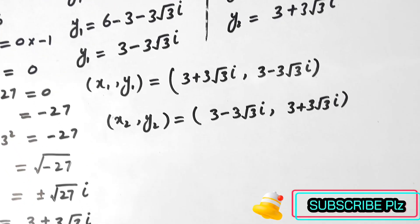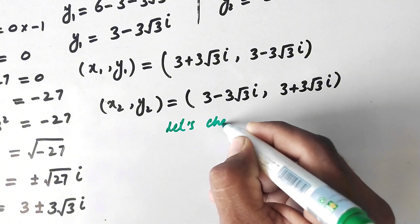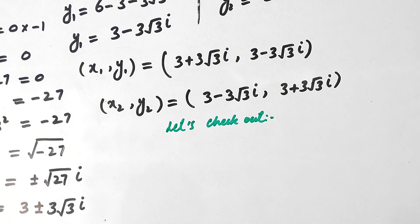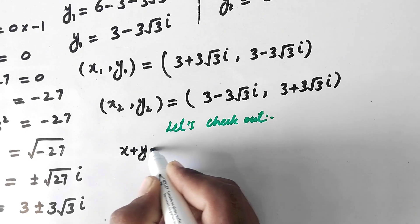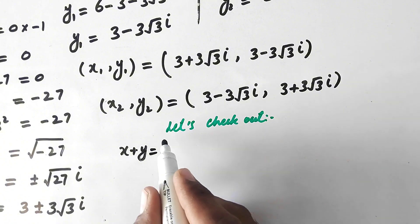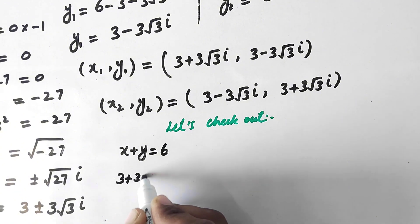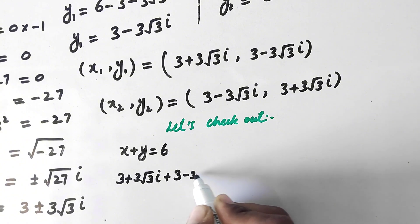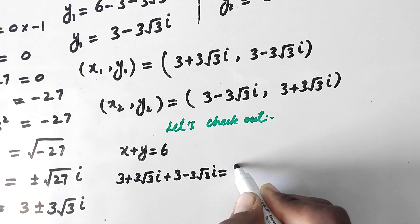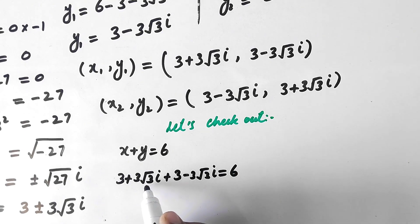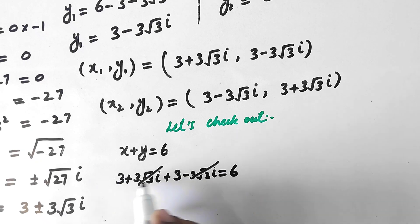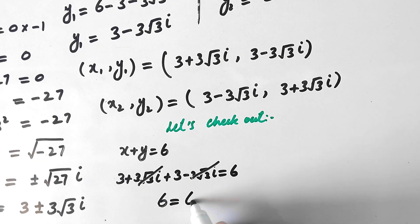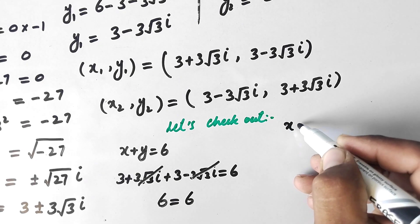Now let's verify our answers. Taking equation x plus y equal to 6 and putting in the values: (3 plus 3 root 3 i) plus (3 minus 3 root 3 i) equals 6. The positive 3 root 3 i and negative 3 root 3 i cancel each other, leaving 3 plus 3 equal to 6, which equals 6. The values satisfy the first equation.